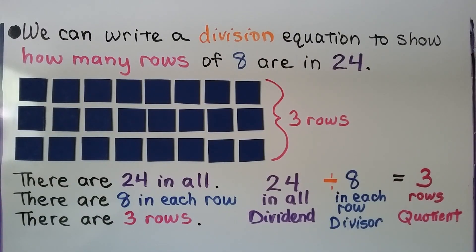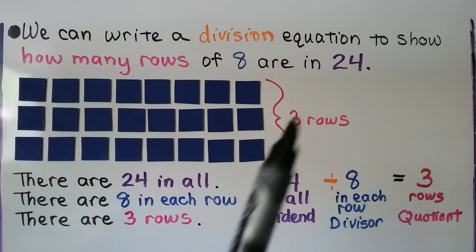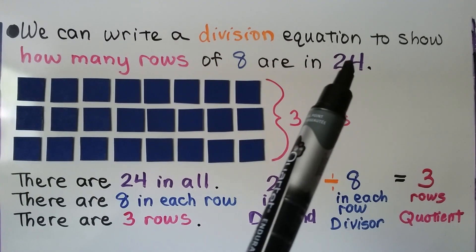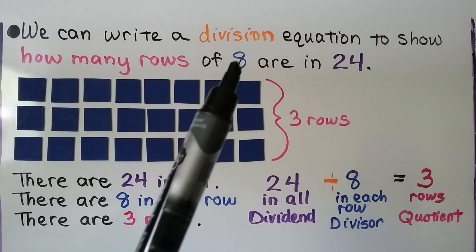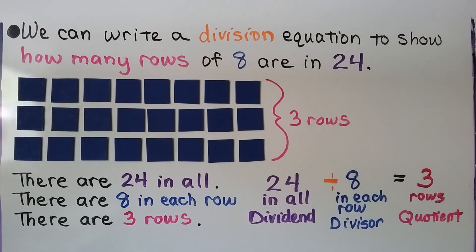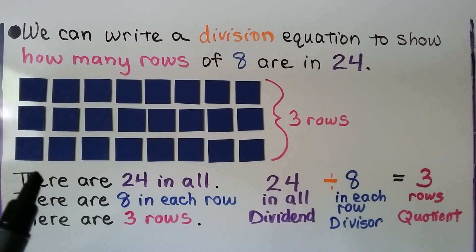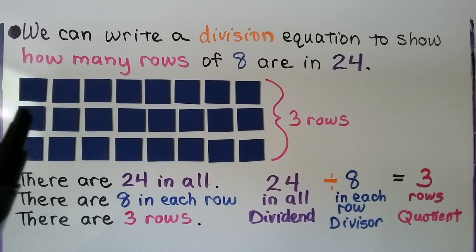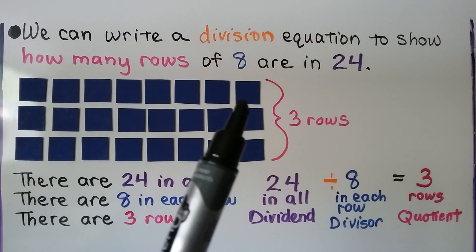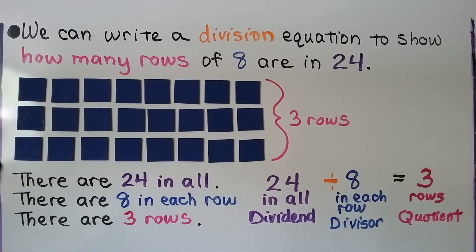We can write a division equation to show how many rows of 8 are in 24. We know there are 24 in all, and there are 8 in each row. We take our counters and put 8 in a row until we have 24 counters. There are 3 rows.